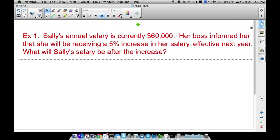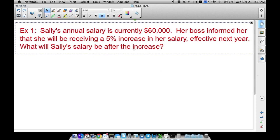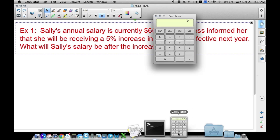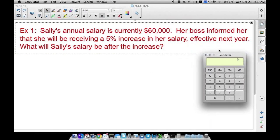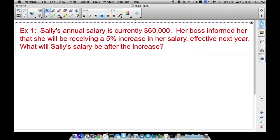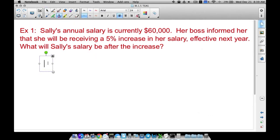Let's look at the first one. Example one: Sally's annual salary is currently sixty thousand dollars. Her boss informed her that she will be receiving a five percent increase in her salary effective next year. What will Sally's salary be after the increase? We want to find a percentage of a number. We want to find five percent—that's the question we have to ask ourselves first. What is five percent of sixty thousand?